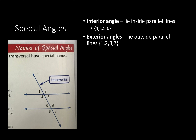Next are going to be exterior angles. The ones that were interior were the inside; exterior would be the outside. These are the ones that lie outside the parallel lines — that would be one, two, eight, and seven. You can think of these as the ones outside the parallel lines; the outer ones are the exterior angles.